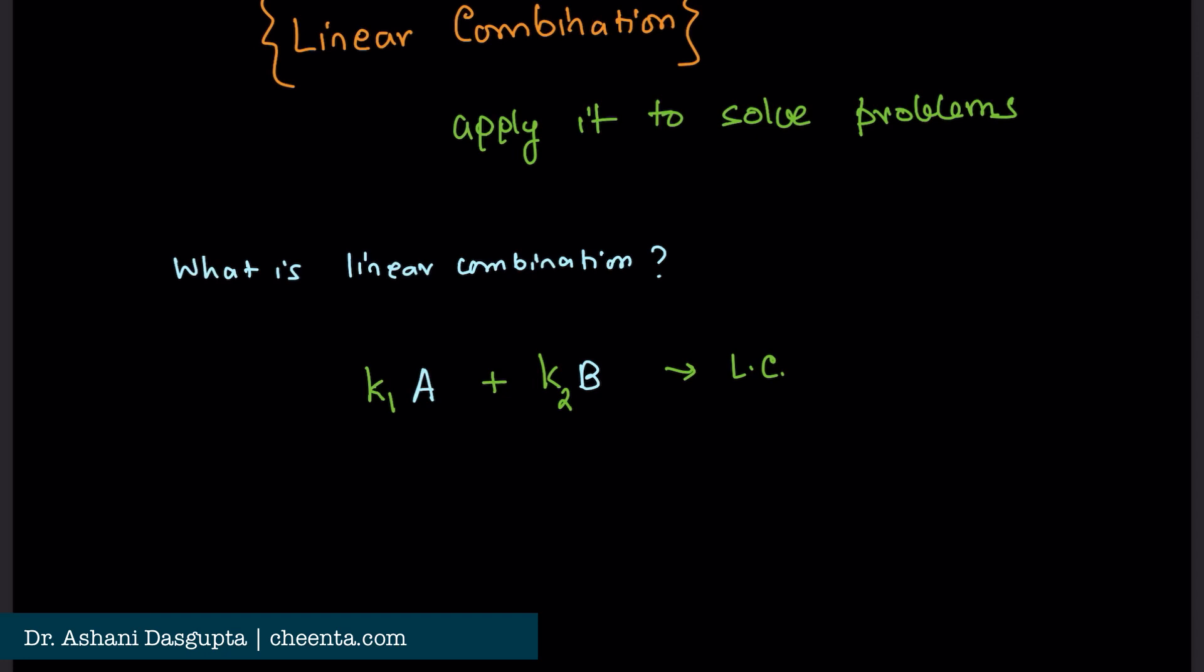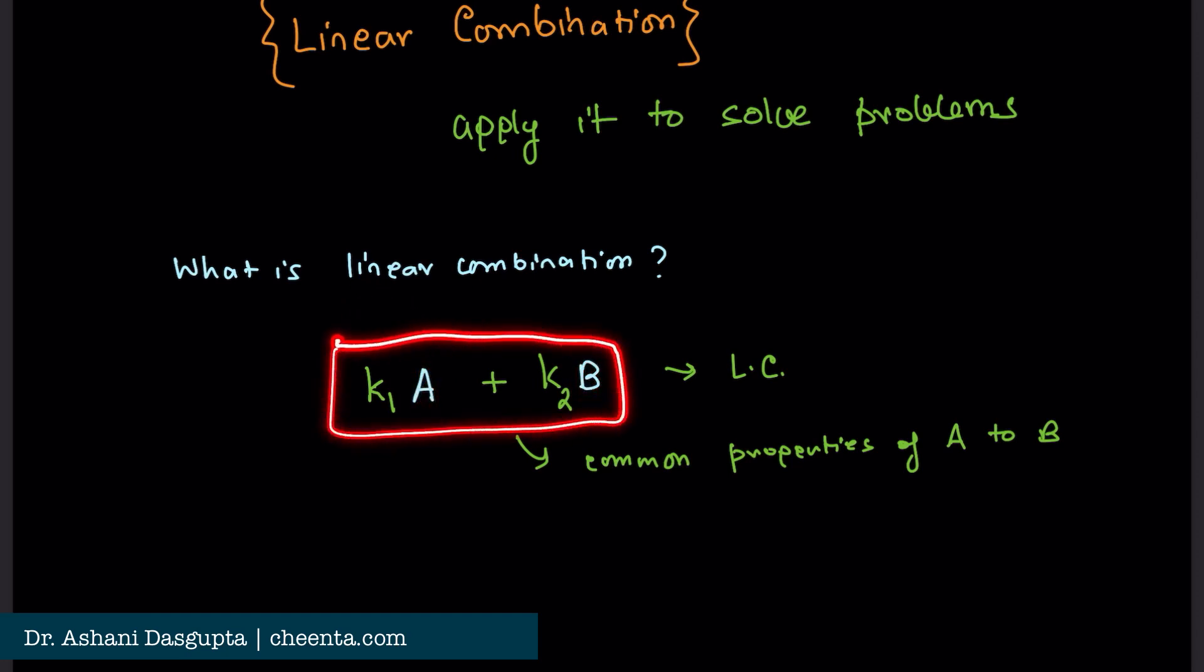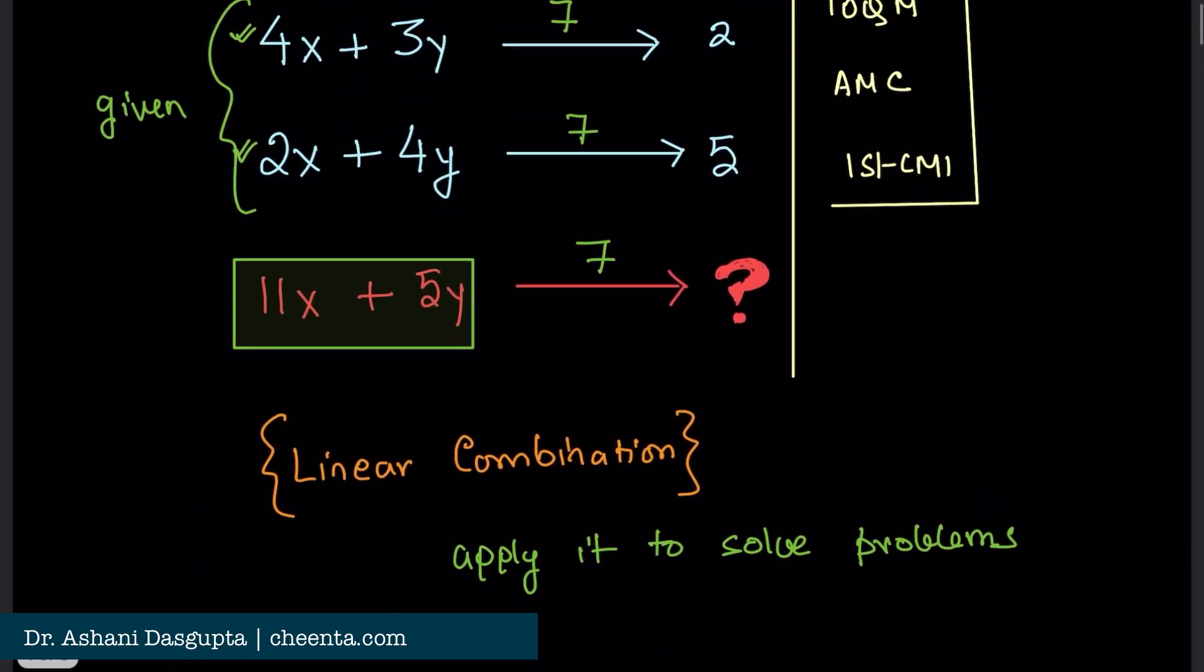And this particular combination enjoys, this particular number enjoys, the common properties of A and B. That is why it is important. For example, if A and B has any common divisor, that number will also divide K1 times A plus K2 times B.